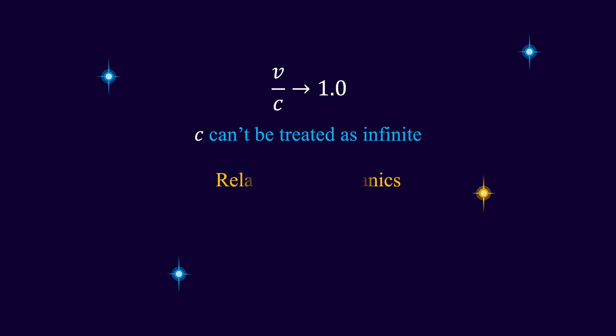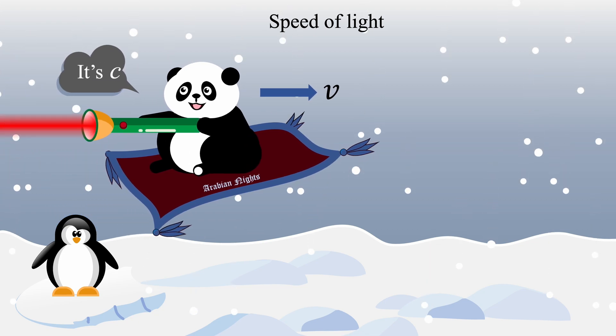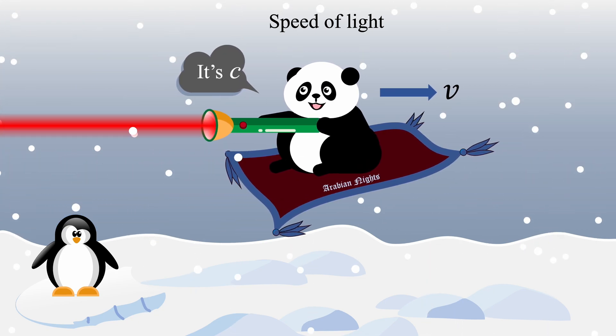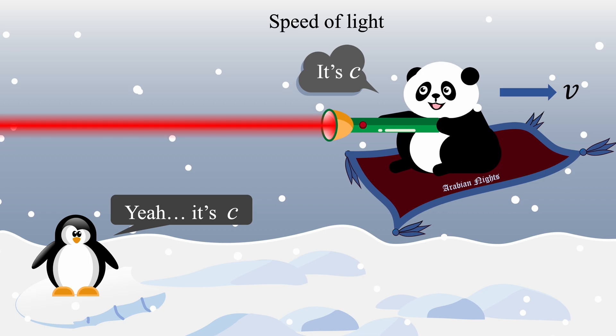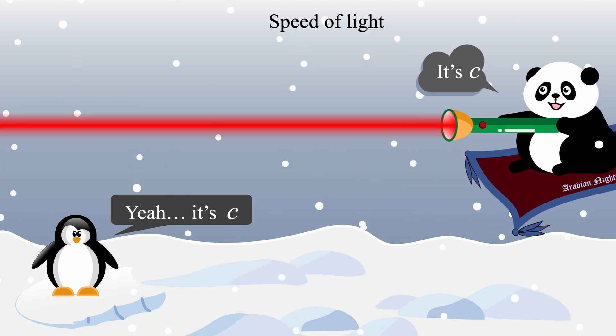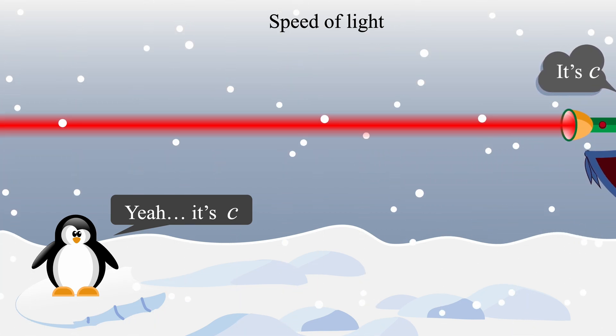In such cases, relativistic mechanics based on special relativity must be used. The existence of the universal speed limit equal to the speed of light in vacuum invariant across all inertial frames radically challenges the foundations of Newtonian physics.